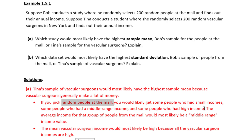Overall, the mean of all those incomes together would be kind of in the middle. Whereas the vascular surgeons all tend to make fairly high salaries, so if you imagine all of those salaries together, they would on average be much higher than a group of people at the mall.